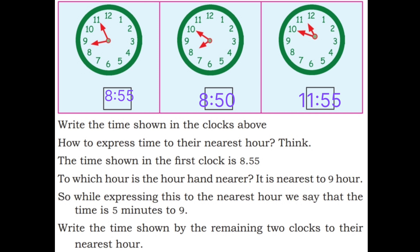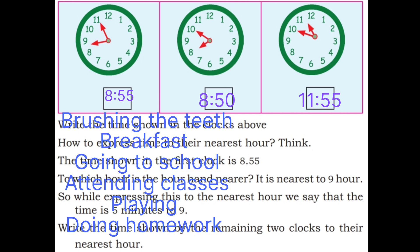How to express time to their nearest hour? The time shown in the first clock is 8:55. To which hour is the hour hand nearer? It is nearest to 9 hour. So while expressing this to the nearest hour, we say that the time is 5 minutes to 9. Write the time shown by the remaining 2 clocks to their nearest hour: 10 minutes to 9, and 5 minutes to 12.